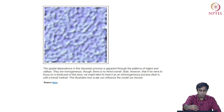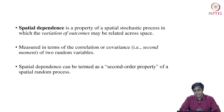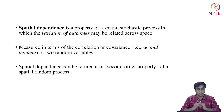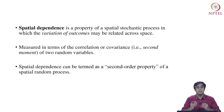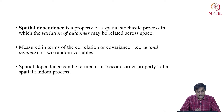The second tool is called spatial dependence. Spatial dependence is a property of spatial stochastic processes in which the variation of outcomes may be related across space. It is measured in terms of correlation or covariance of two random variables whose locations are identified in space. Since this depends on the second moment of these random variables — the covariance — spatial dependence is also termed the second-order property of a spatial random process.